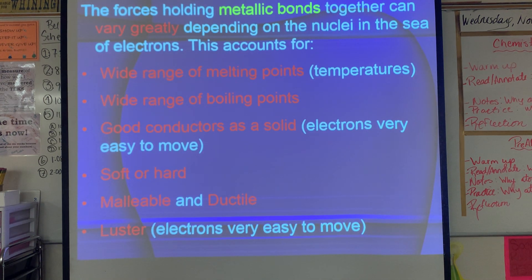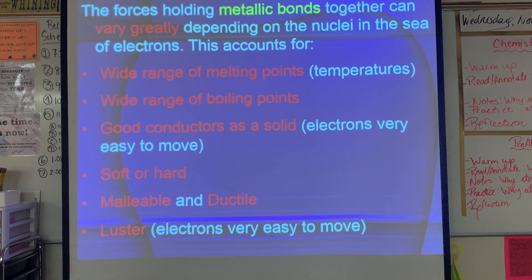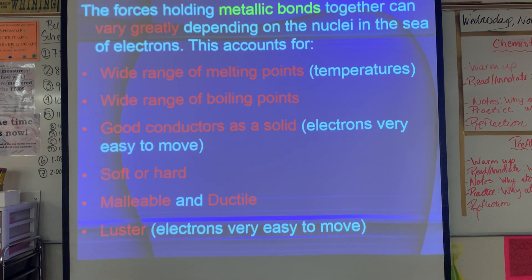Metallic bonds can vary greatly in melting and boiling points depending on the nuclei and sea of electrons. But because their electrons move freely, metals are incredibly good conductors of electricity and heat. They can be either soft or hard — some metals are soft enough to cut like butter, others are hard enough to build buildings with. They're malleable (can be flattened with a hammer), ductile (can be drawn into wire), and have luster — they're shiny because freely moving electrons absorb and re-emit light.